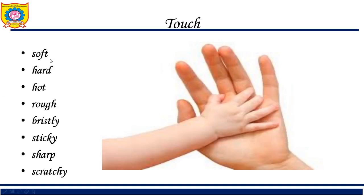For touch, simple adjectives include soft, hard, and hot — for example, 'soft palms' to describe a baby's hands. Then we have 'rough' and 'bristly,' where bristly means prickly or thorny — 'He has bristly palms because he always works with chemicals.'